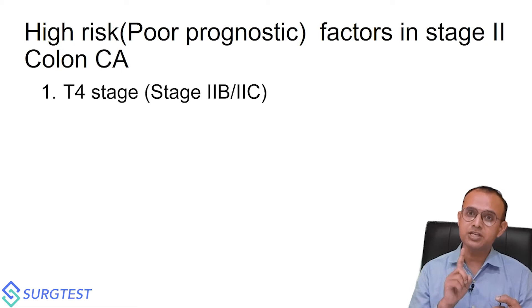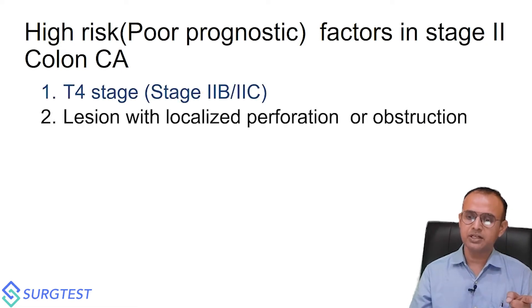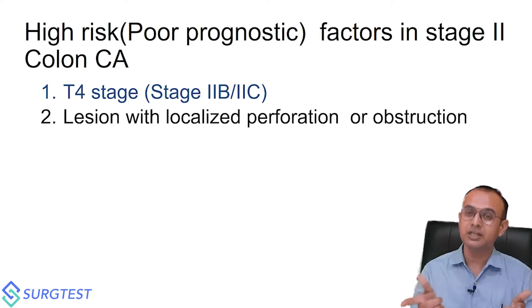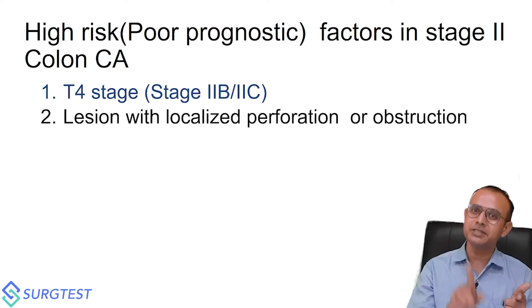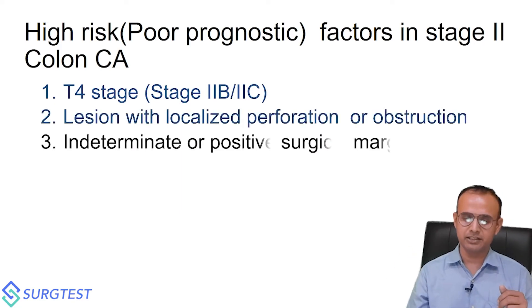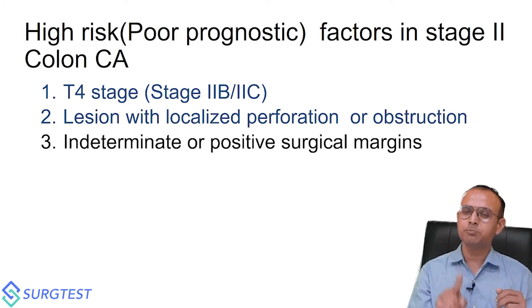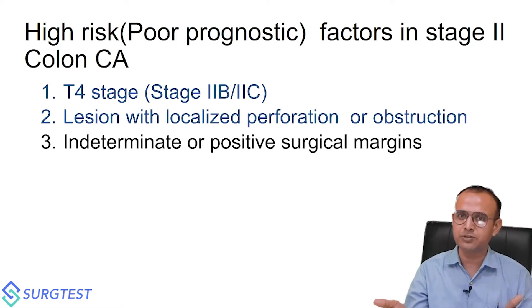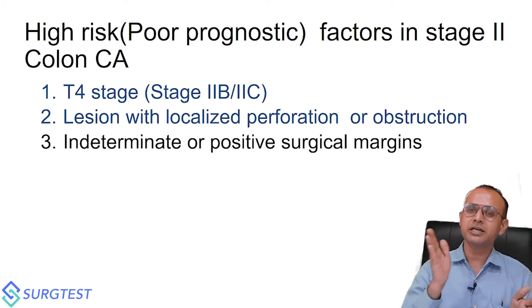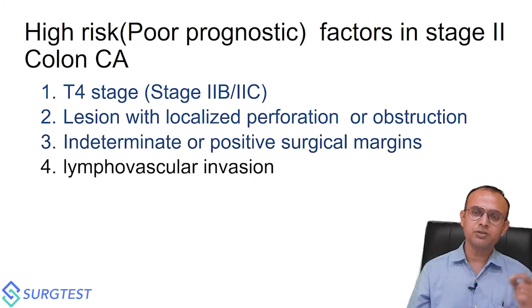The high-risk features in stage two include: T4 disease — that is stage two B or stage two C. If the patient was operated in an emergency due to perforation or obstruction, even if stage two, they are high risk and need chemotherapy. If the surgical margin is positive or indeterminate, as reported by the pathologist, these patients definitely need chemotherapy.